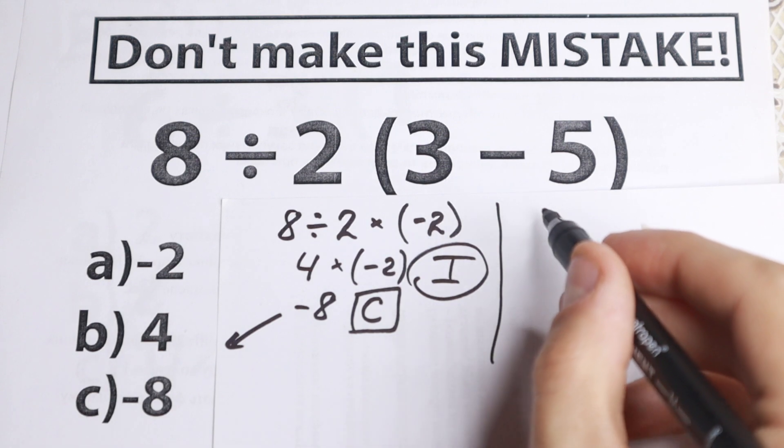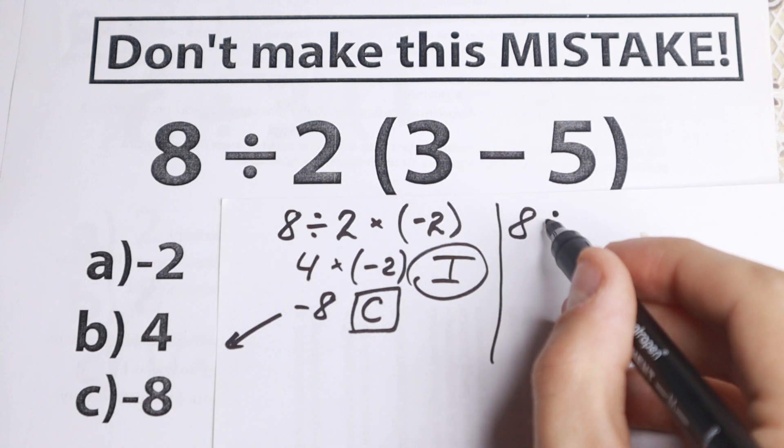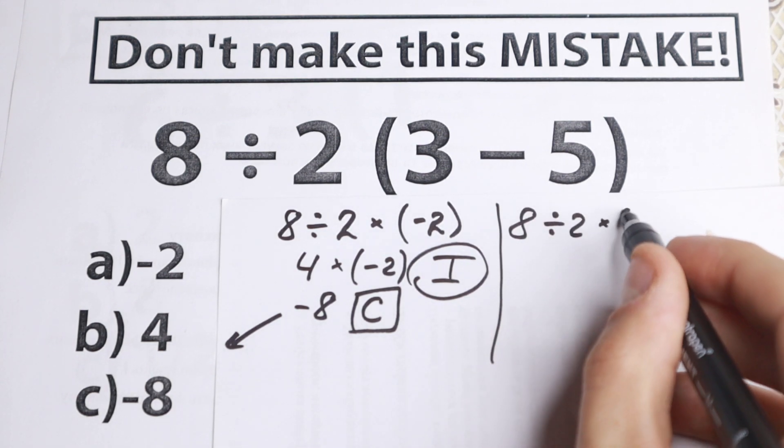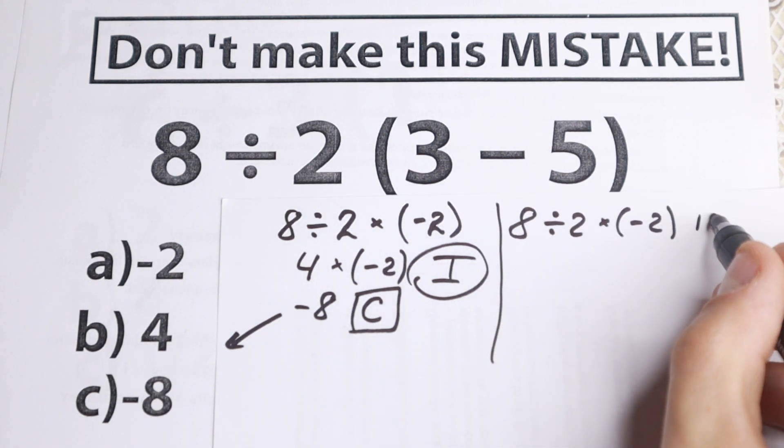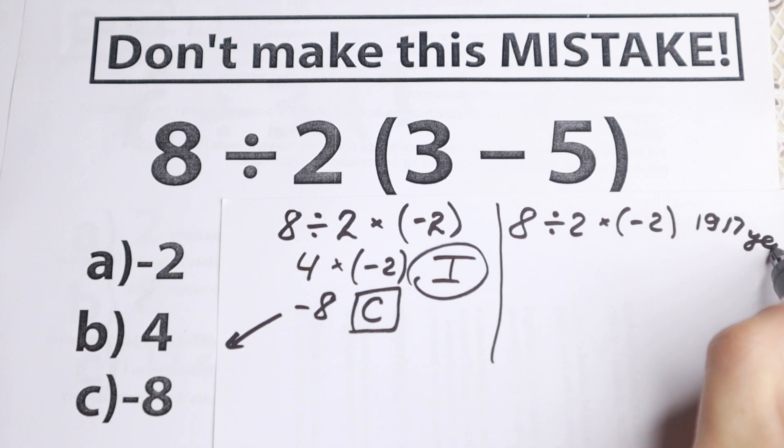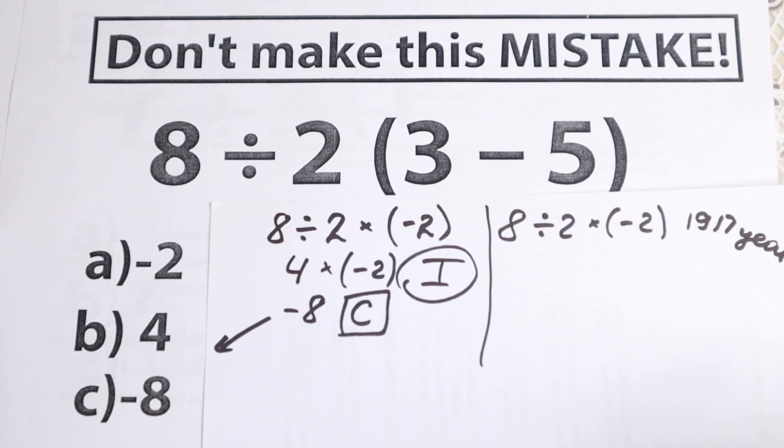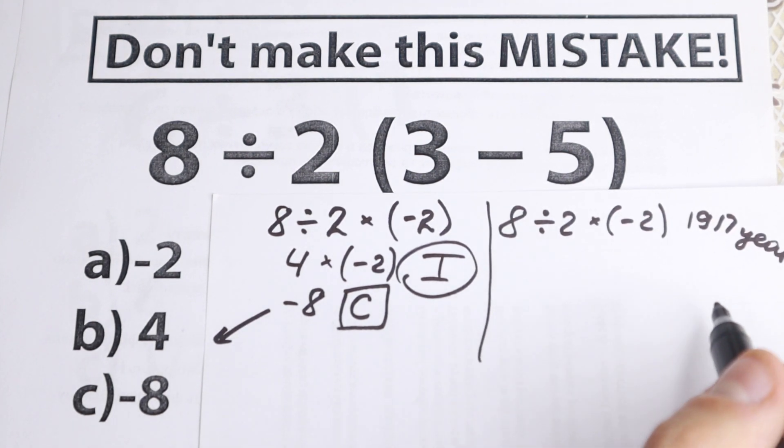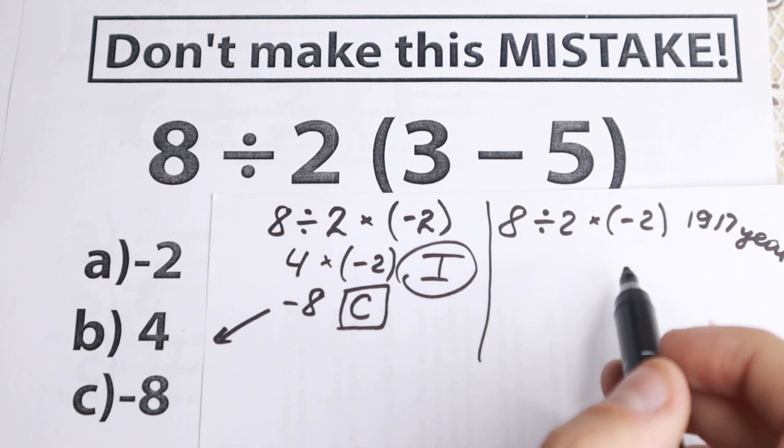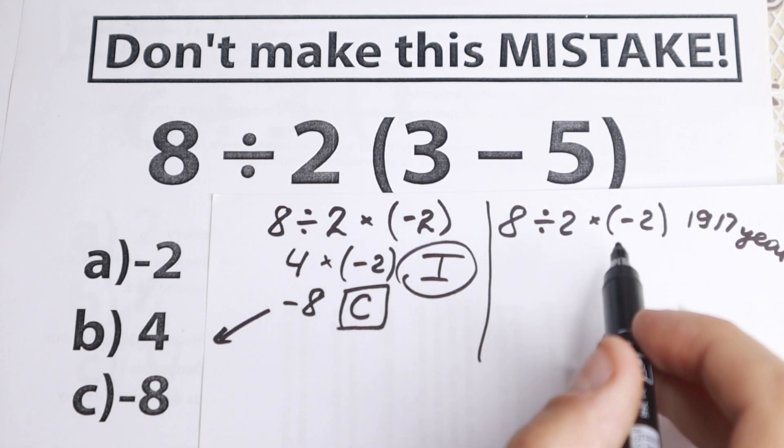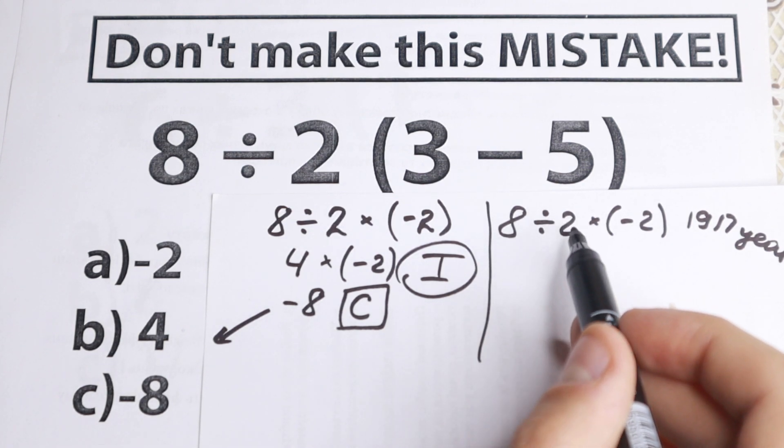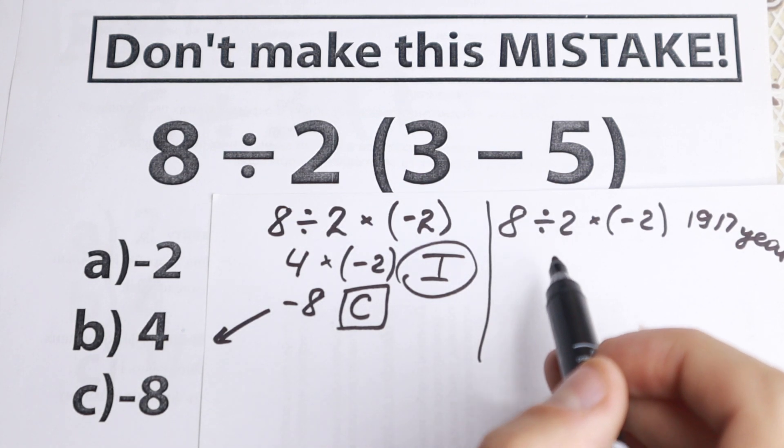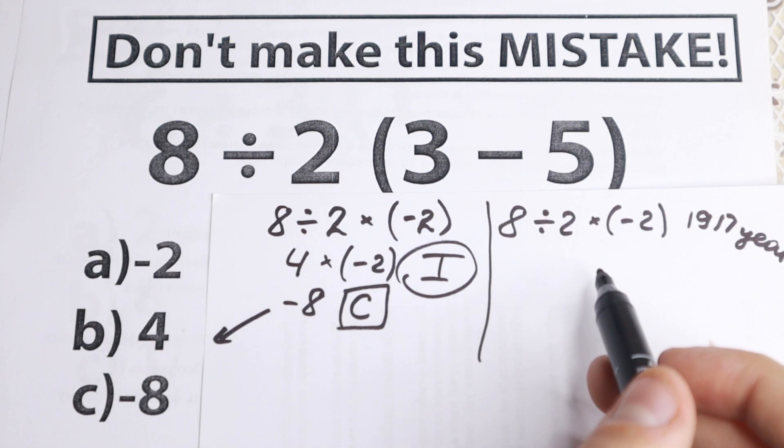And the second method, I write it right here, the same expression. So 8 dividing by 2 and times minus 2. Suppose it was like 1917 year, so I write it right here, 1917 year, and you saw this expression in a textbook. What do you think about the author was trying to write? Historically the symbol divide was used to mean you should divide by the entire product on the right of the symbol.